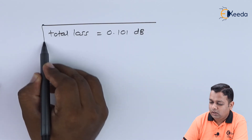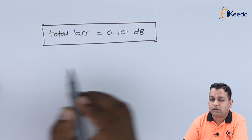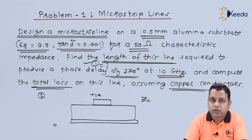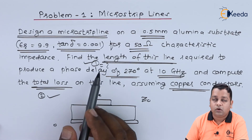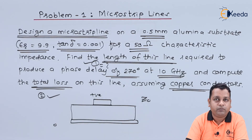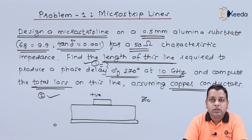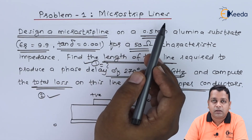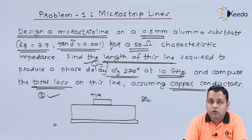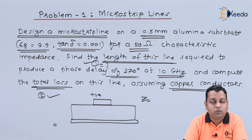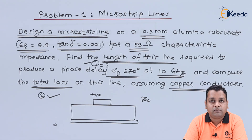Taking both into account, the total loss for the transmission line with copper conductors is 0.101 dB. This is the required answer for the second parameter. This was our problem statement corresponding to the microstrip lines. We shall continue solving problems based on microstrip lines and take problem number two in the next lecture. I hope you enjoy learning microwave engineering topics — for more details and practice you can subscribe to the E-Kidai channel.